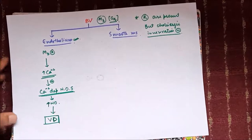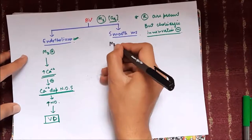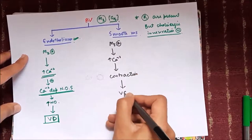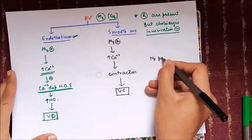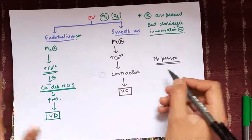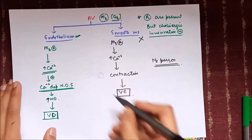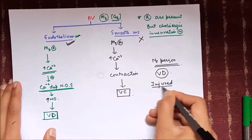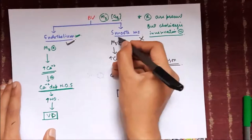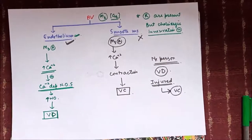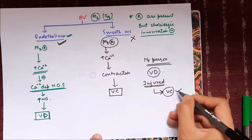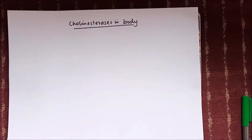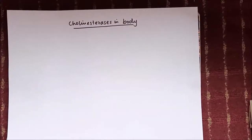The nitric oxide diffuses to smooth muscle and causes vasodilation. However, if M3 receptors are stimulated on the smooth muscle itself, increased calcium causes contraction and vasoconstriction. In a normal person with intact endothelium, the predominant effect is vasodilation. In an injured vessel, acetylcholine diffuses to M3 receptors in smooth muscle, causing vasoconstriction — which is the initial response to reduce bleeding.